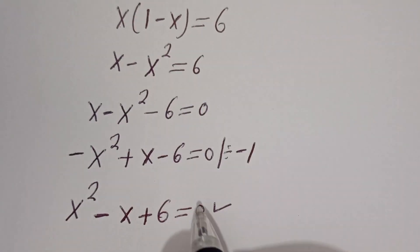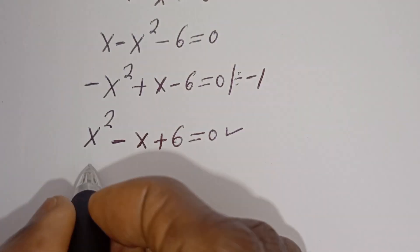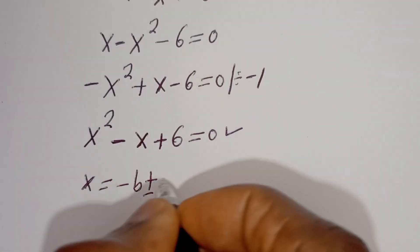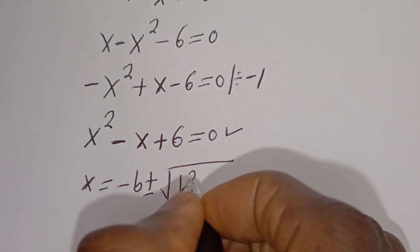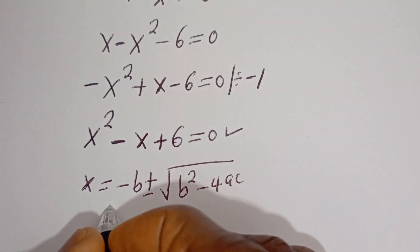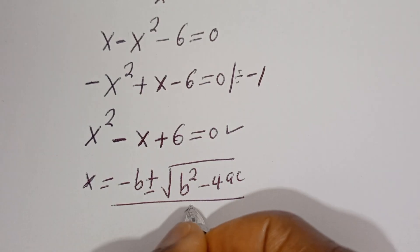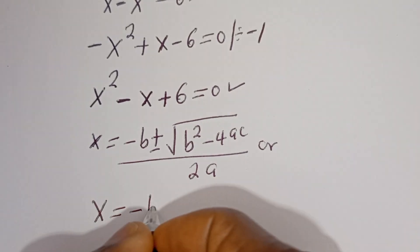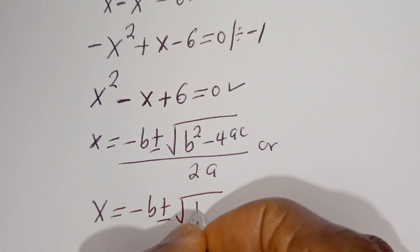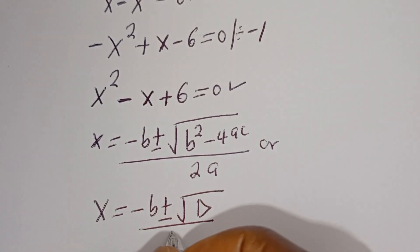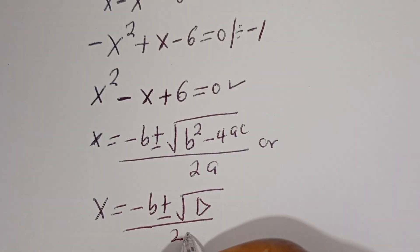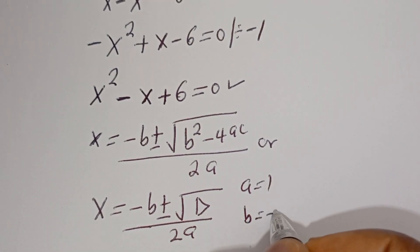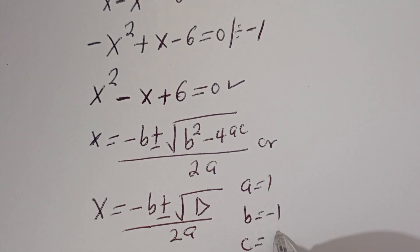This is a quadratic equation. Let's solve using the standard quadratic formula: x is equal to minus b plus or minus square root of b squared minus 4ac, all over 2a. From this equation, a is equal to 1, b is equal to minus 1, and c is equal to 6.